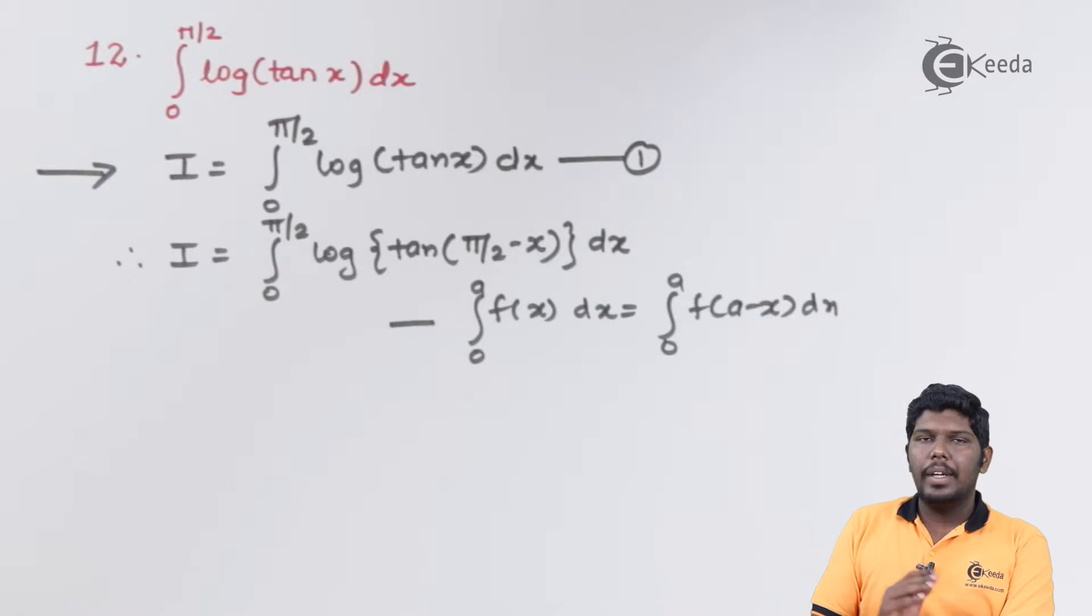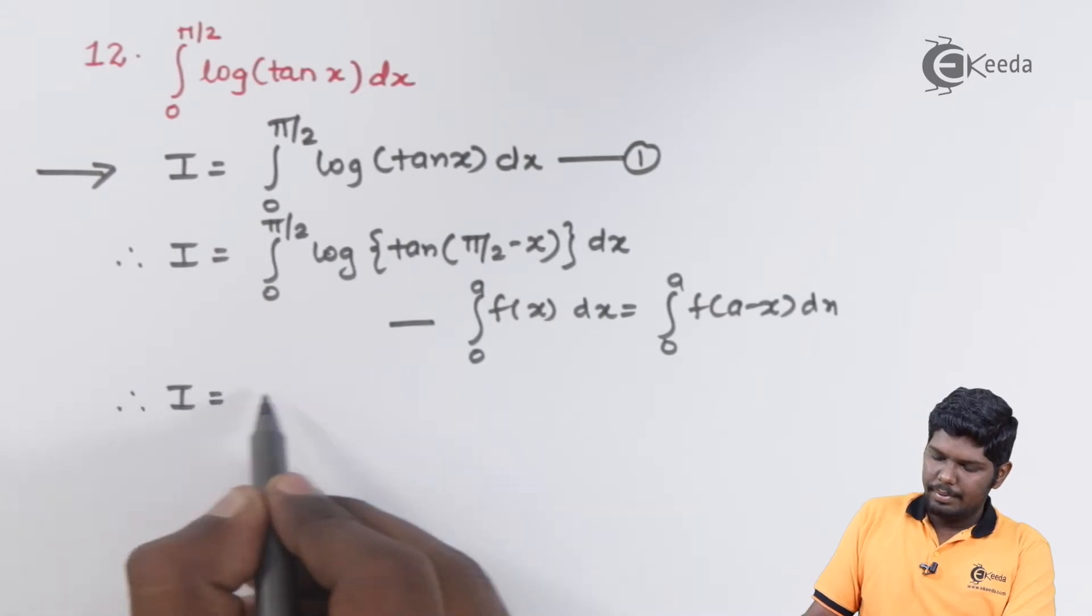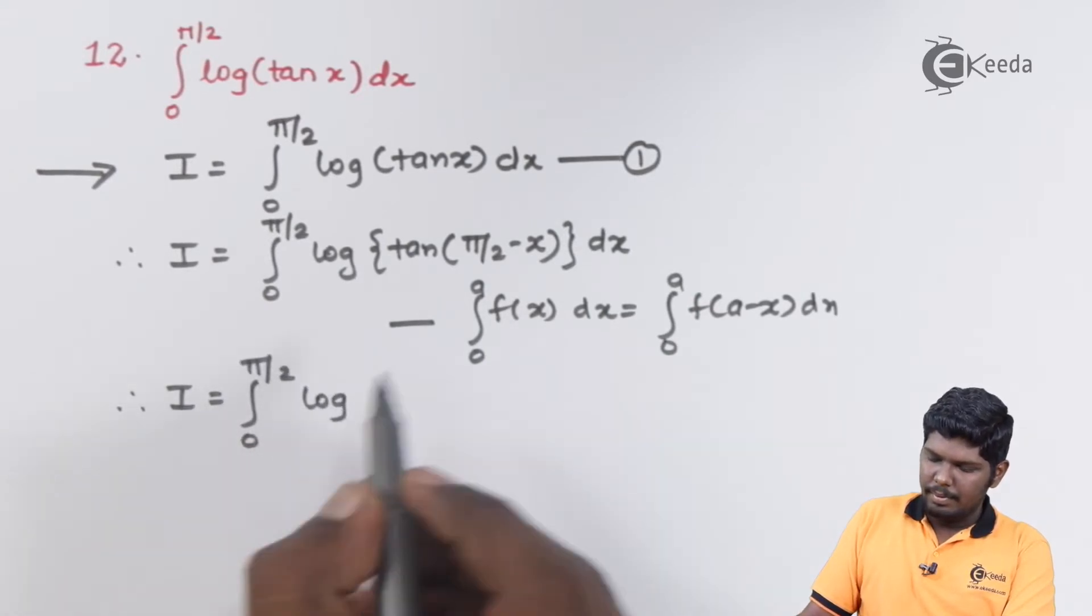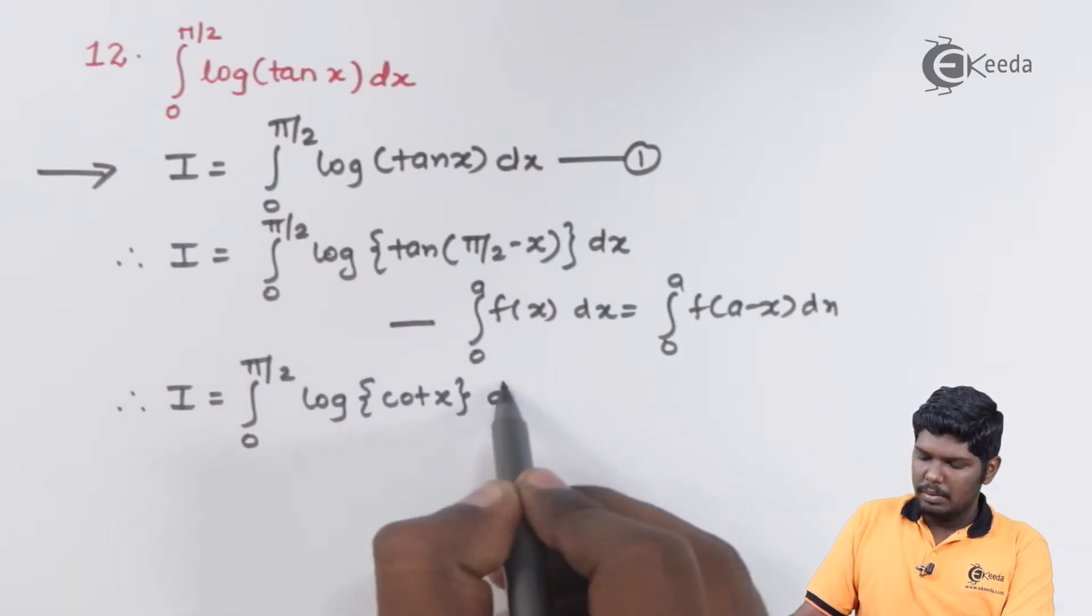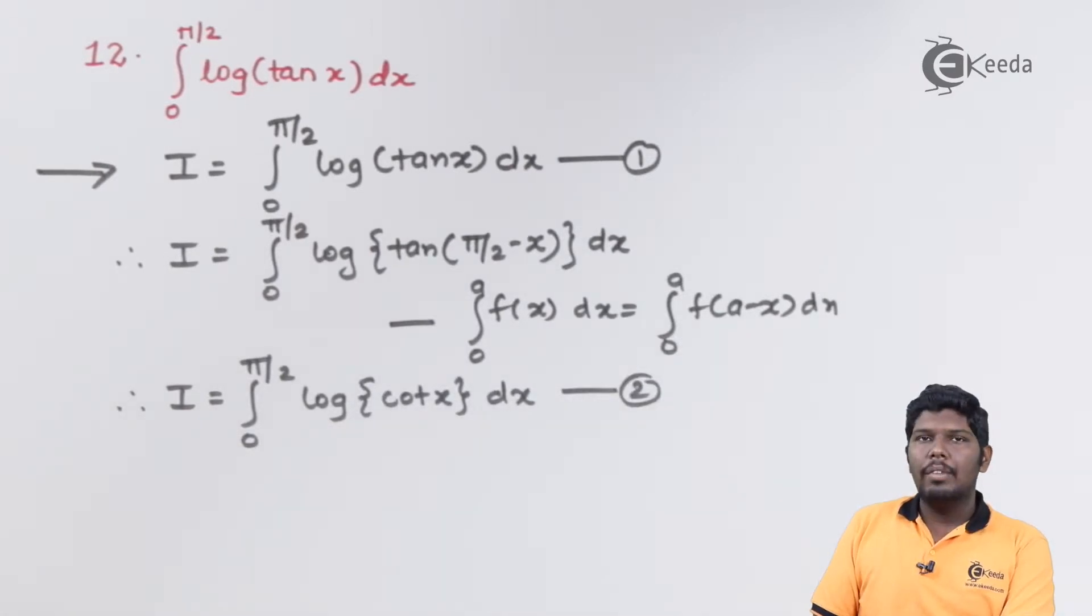As integral 0 to a f of x dx is equal to integral 0 to a f of a minus x dx. tan pi by 2 minus x will give you cot x. So we have integral 0 to pi by 2, log of cot x dx. Now considering this as equation number 2 we can add equation number 1 and 2.